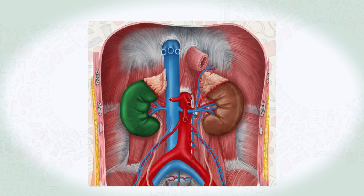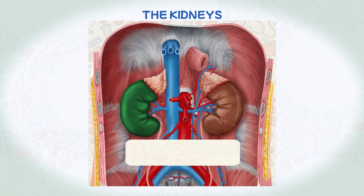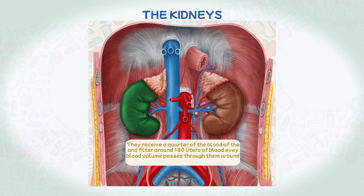In comparison to other body organs, kidneys are relatively smaller, but they perform one of the most important functions. They receive a quarter of the blood of the cardiac output and filter around 180 liters of blood every day, meaning that the entire blood volume passes through them around 60 times every day.